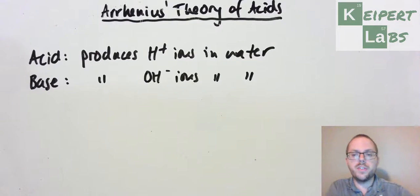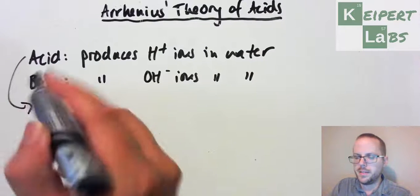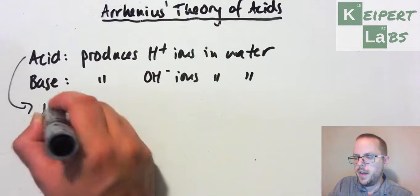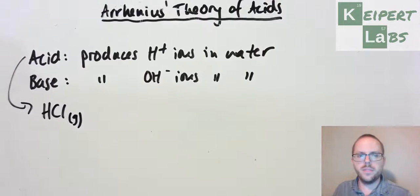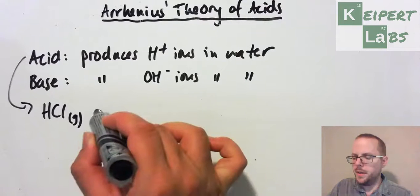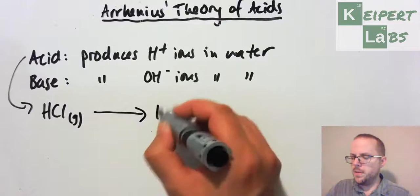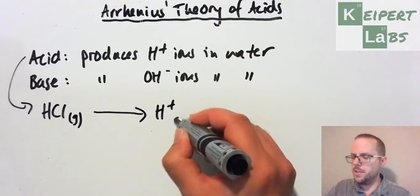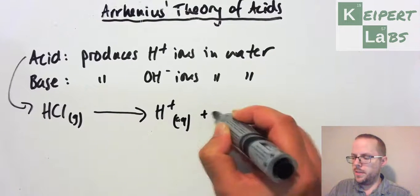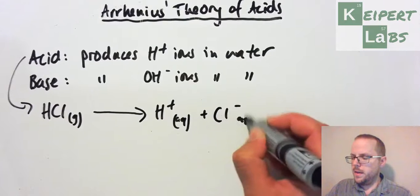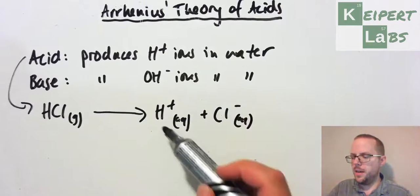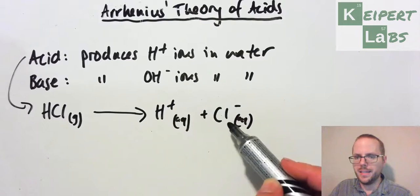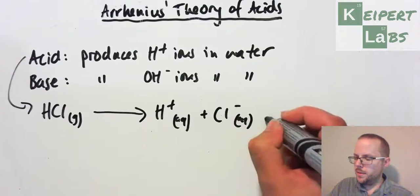If we're looking at an example of an acid, let's say we take hydrogen chloride gas. It's a molecular gas, and if we pump it into water, what happens is that it splits or dissociates into two substances: a hydrogen ion and a chloride ion, making it acidic. Therefore it's an acid.